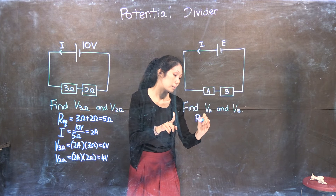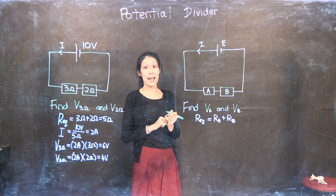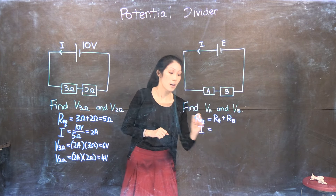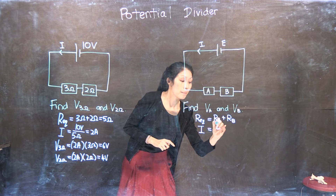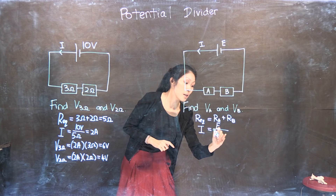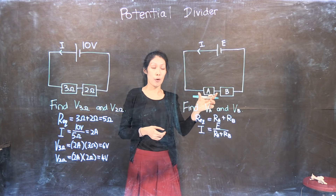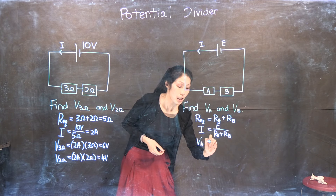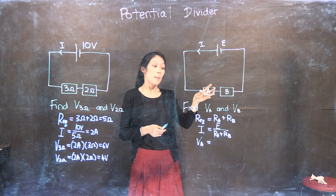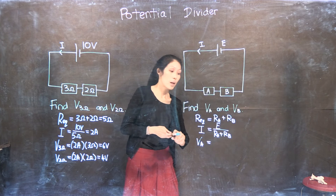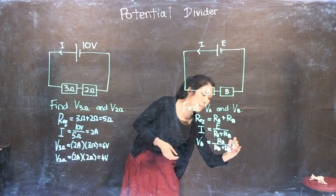First I can find the equivalent resistance — I simply add up the resistance of resistor A and B. Next I'm going to find the current I. I'll take the potential difference across these two resistors, which is also the EMF of the source E, divided by the equivalent resistance RA plus RB. Now let's find the potential difference across resistor A. VA equals the current going through it multiplied by its resistance RA, so my equation will look like: RA divided by RA plus RB, multiplied by E.